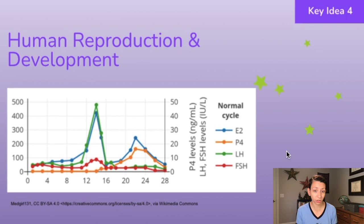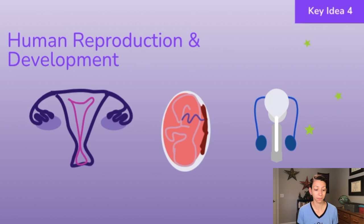Those hormonal changes produce physiological effects in the uterus and the ovaries that make pregnancy possible. Looking at our gonads, or sex organs, in human males and females — we have gametes, or egg cells, produced in the ovaries, and then those eggs will leave through the fallopian tubes.